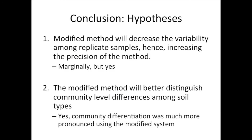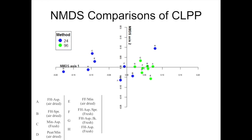In conclusions: the modified method did decrease variability among replicate samples, increasing precision compared to the traditional method — though the traditional method still worked reasonably well. For mineral soil samples, traditional MicroResp works just fine. However, the modified method better distinguished community-level differences among soil types — as seen in the ordination, it clearly distinguished between differences that were there.